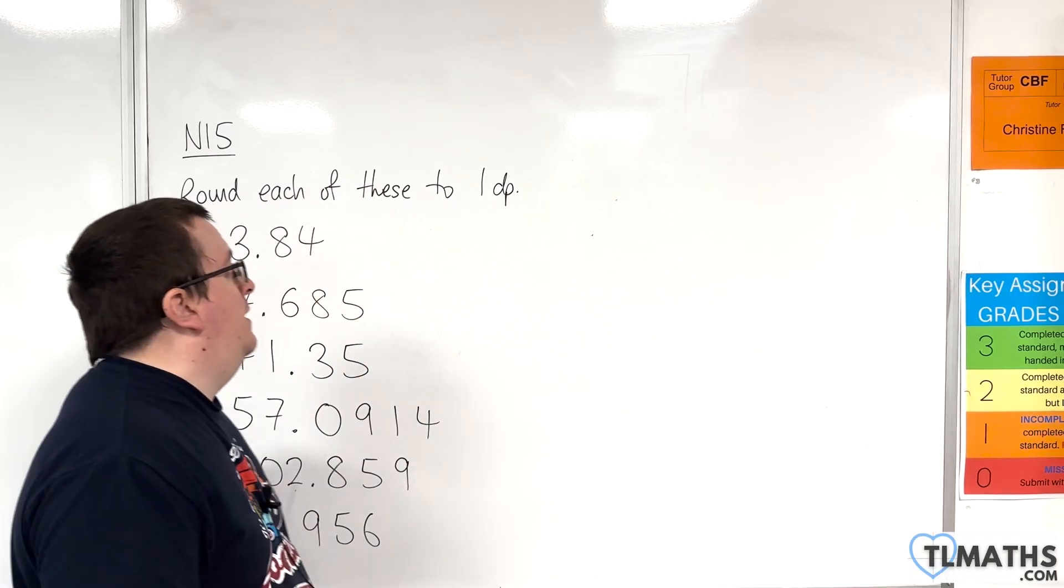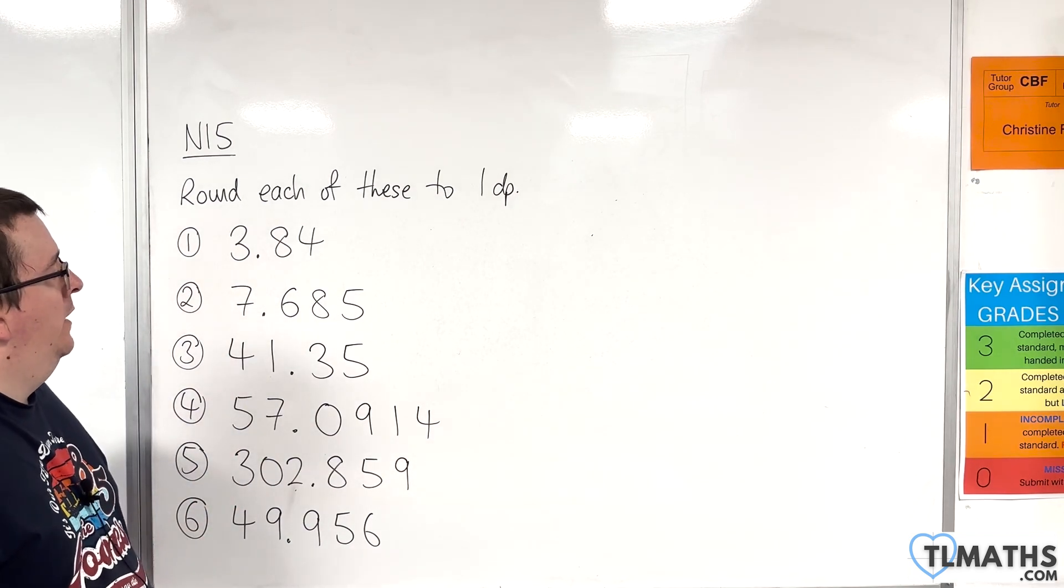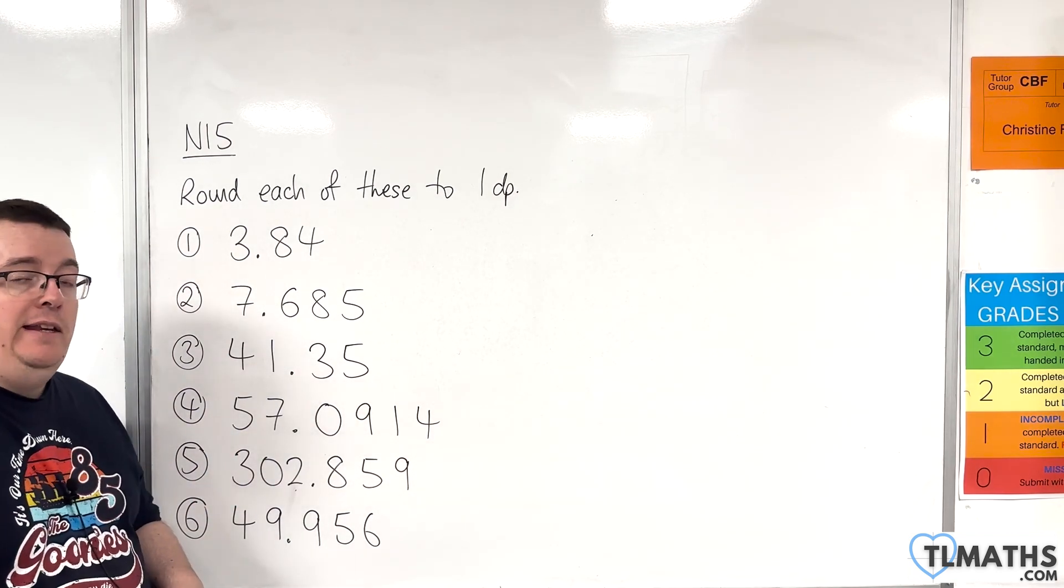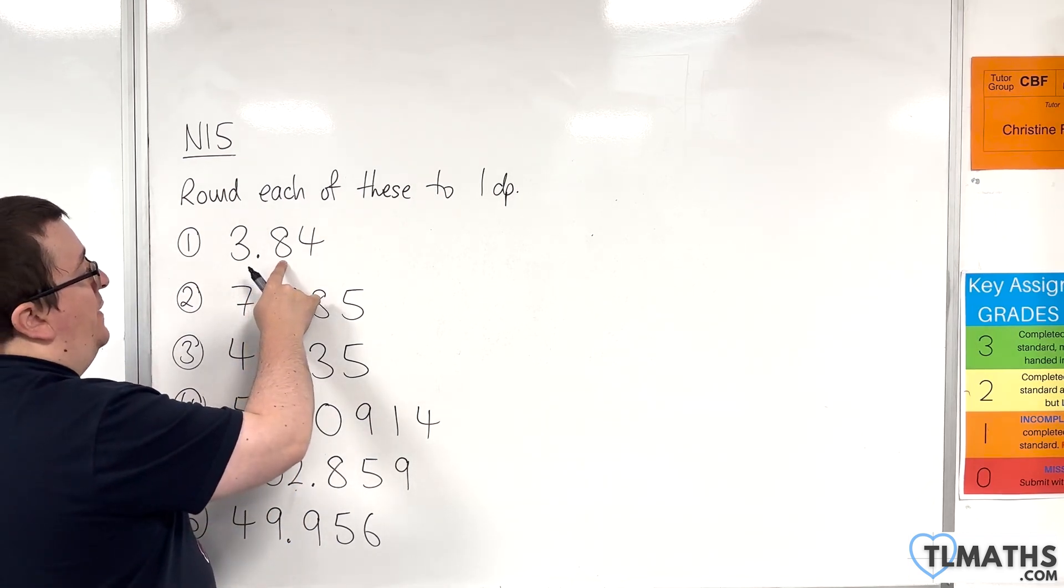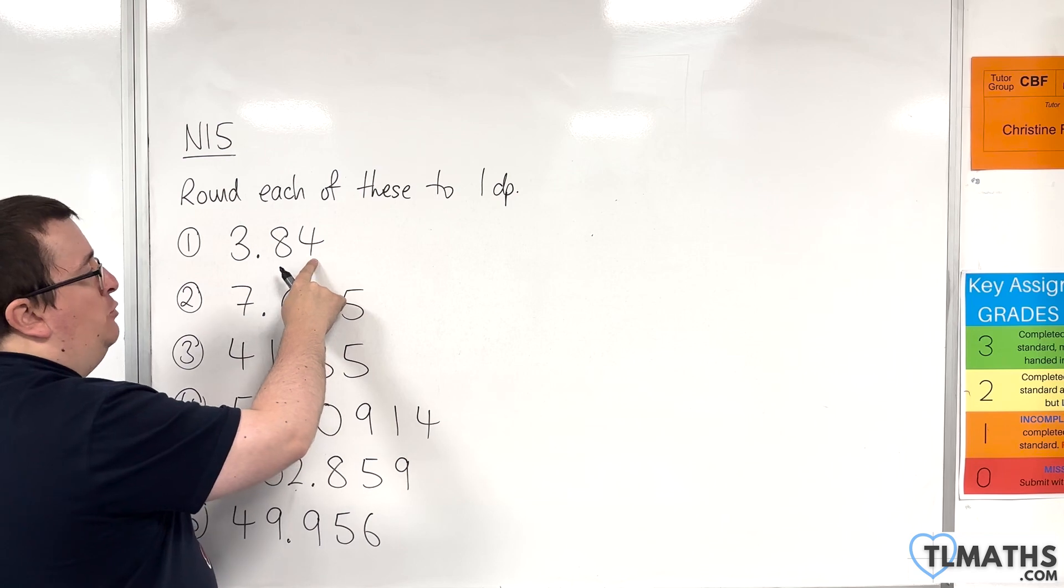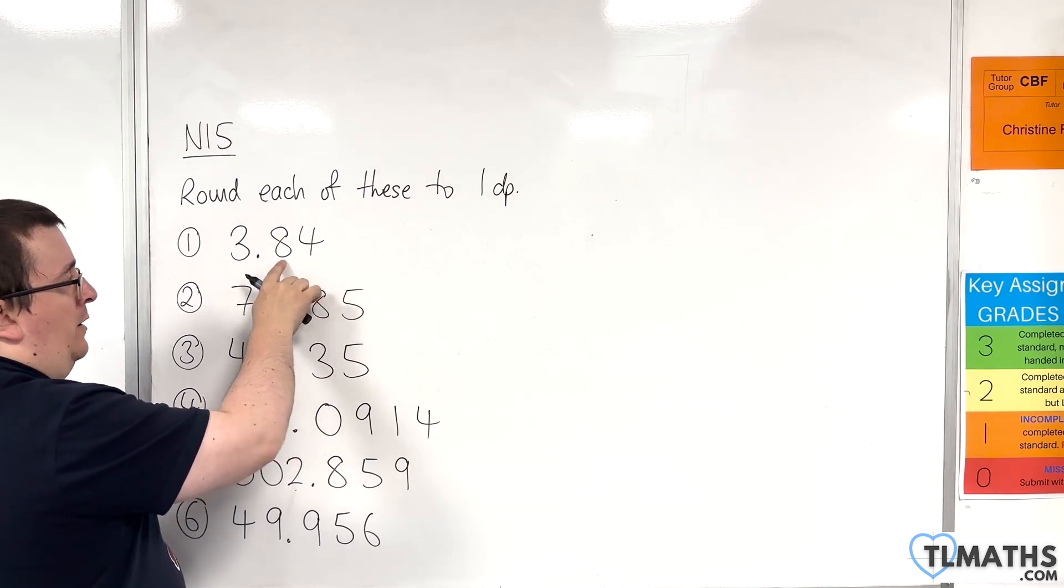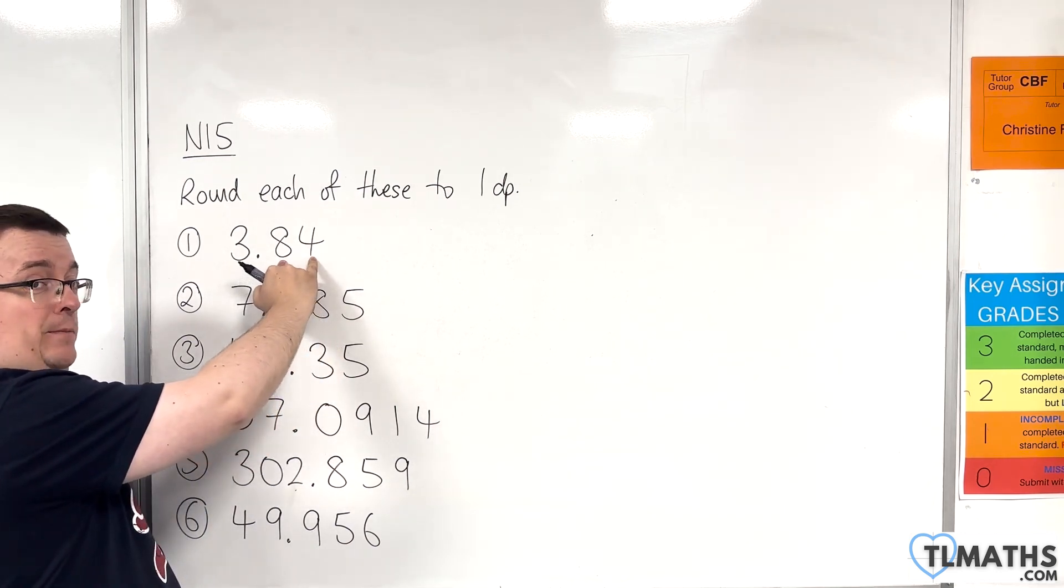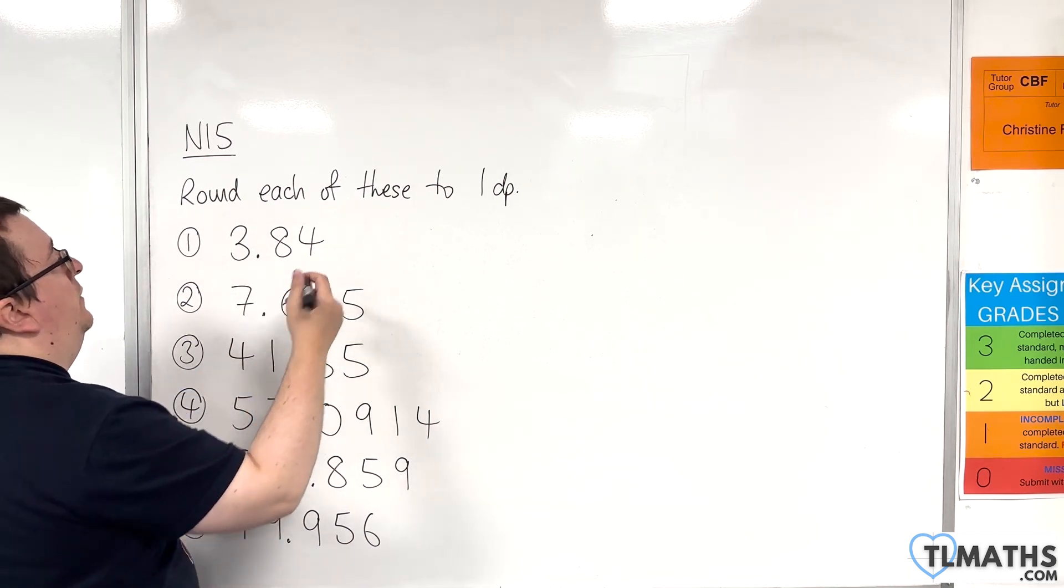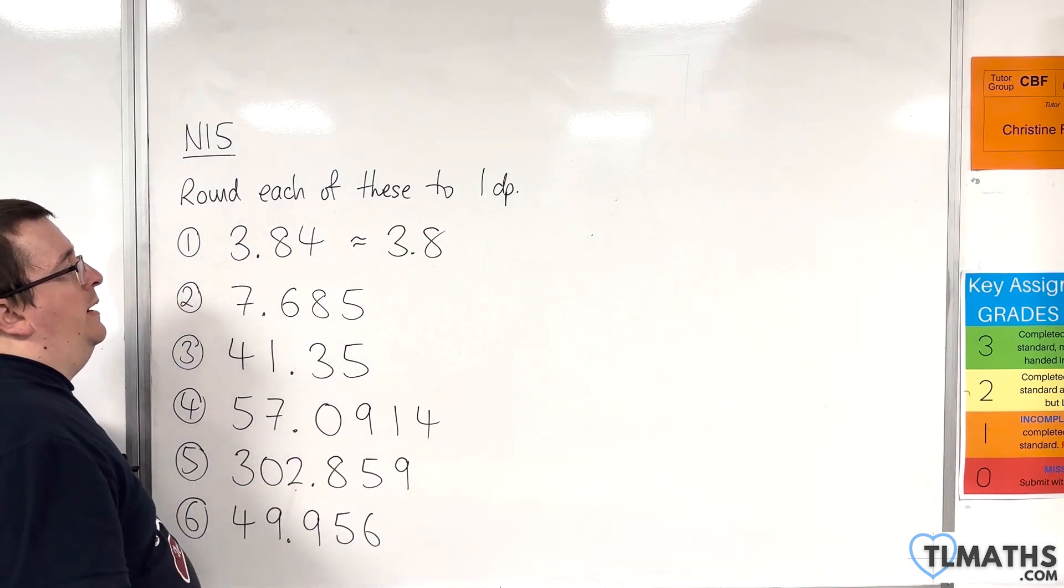So, in this video, I want to round each of these to one decimal place. The first thing you need to do is find the first decimal place, and then the number to the right tells you whether you should round up or round down. So, in this case, we look at the 8. To the right is 4, so we round down because it's less than 5. So, this would be 3.8 to one decimal place.